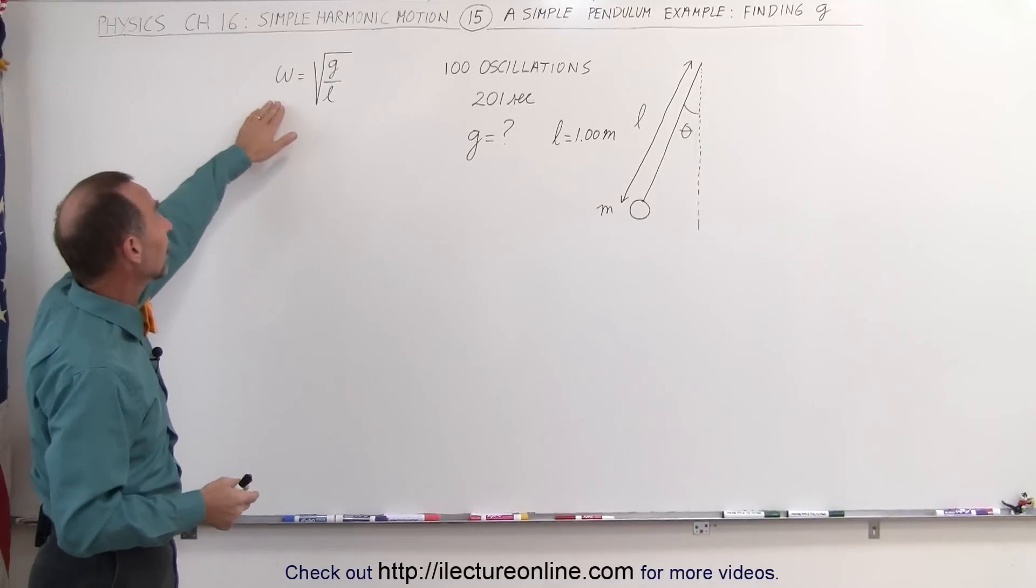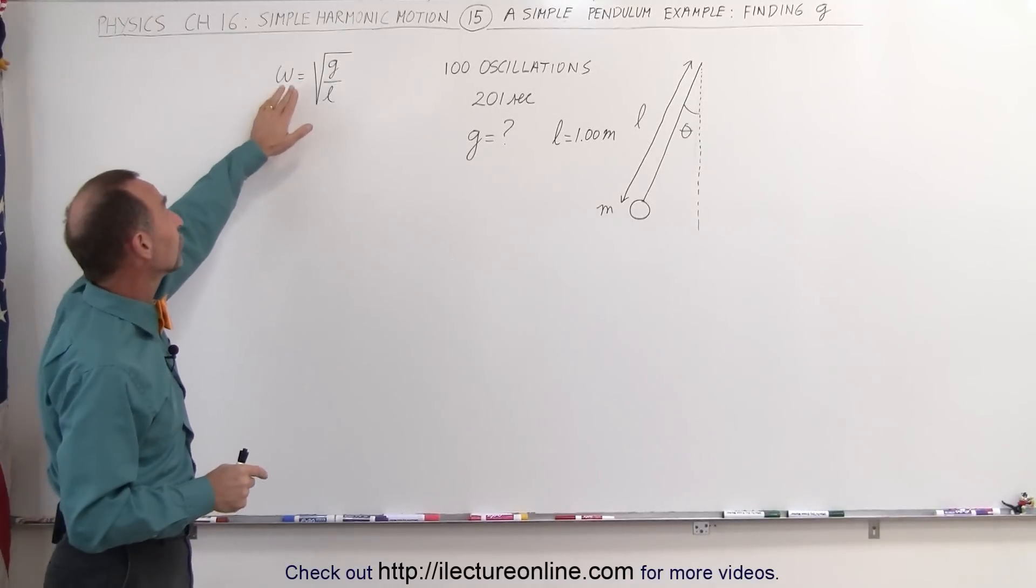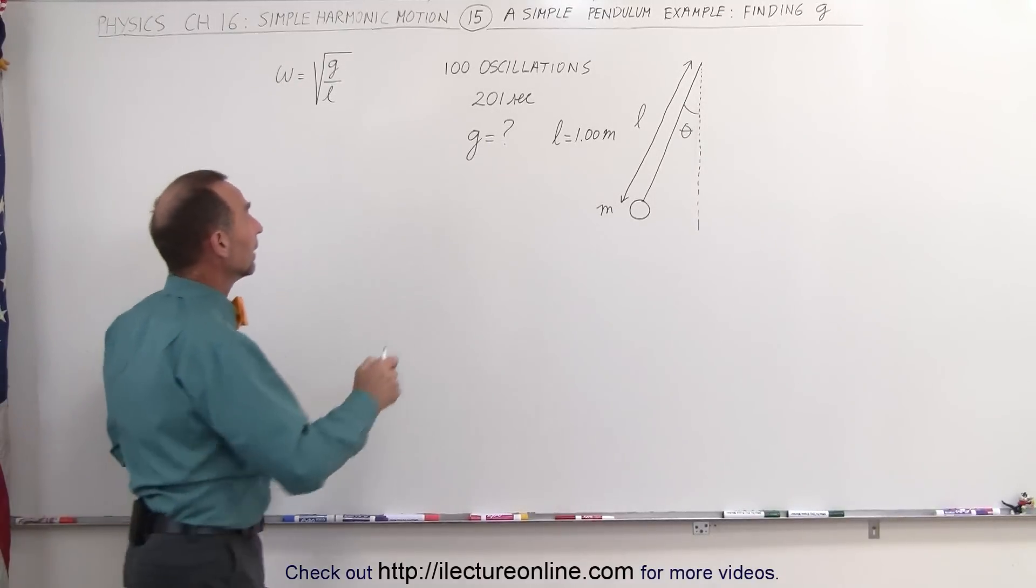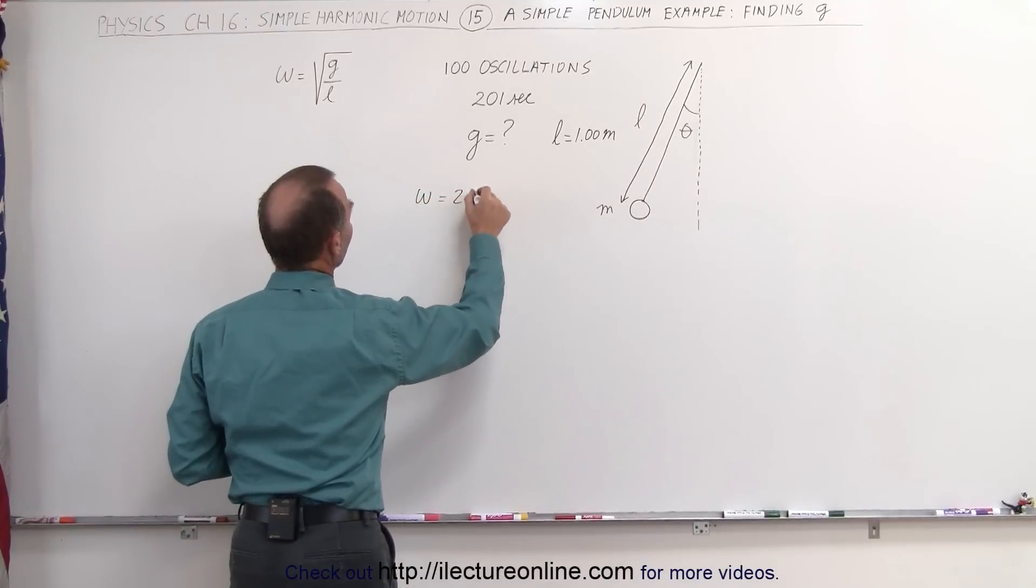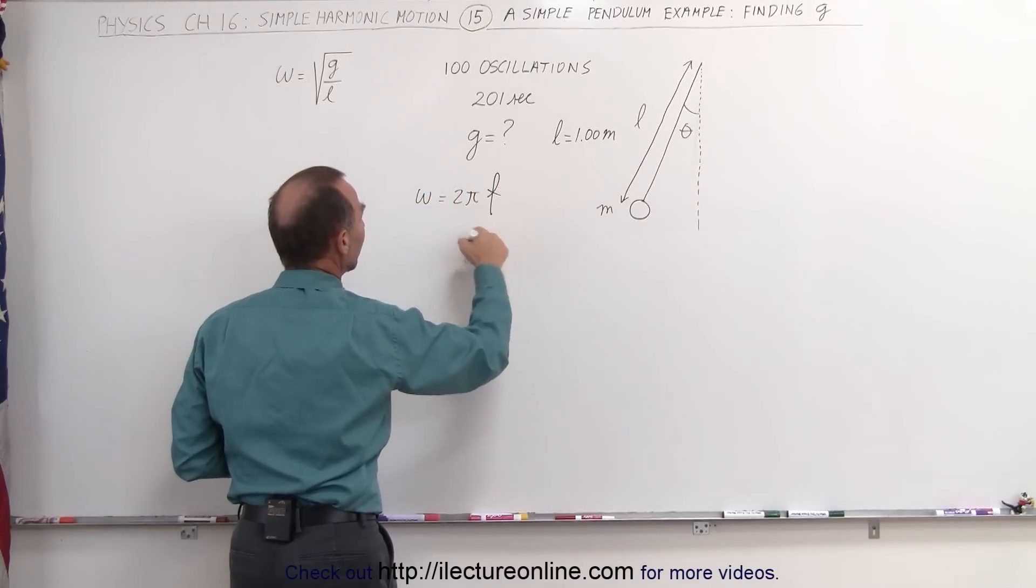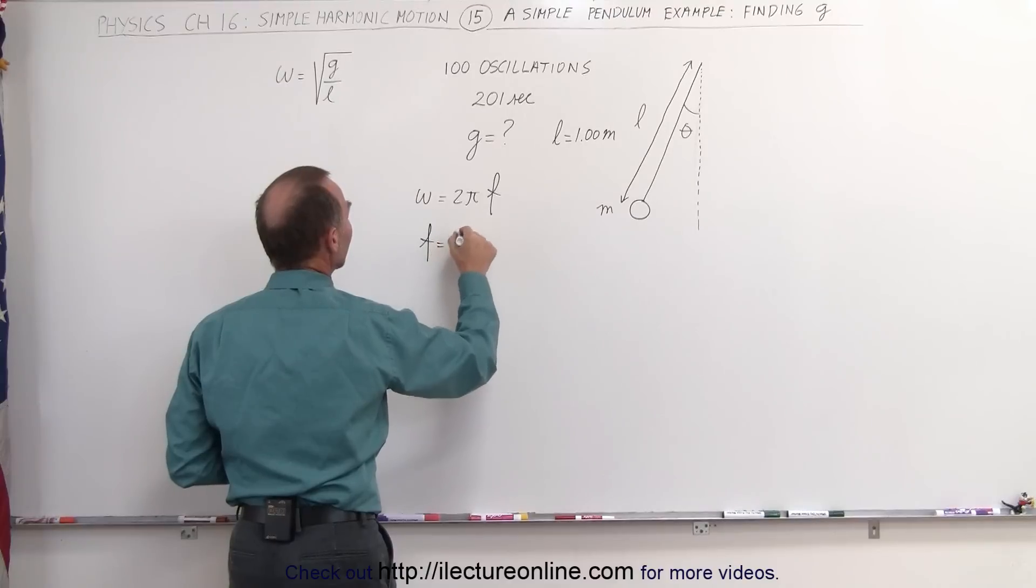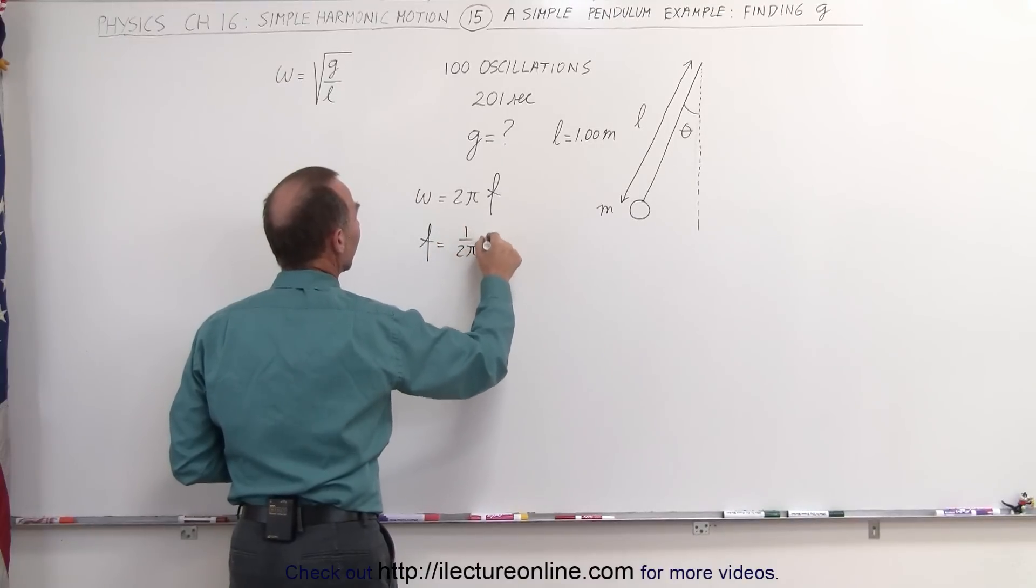We use the simple equation that omega, the angular frequency, is equal to the square root of g over L. We also realize that omega is equal to 2π times the oscillator frequency, which means that the frequency is equal to 1 divided by 2π times omega.